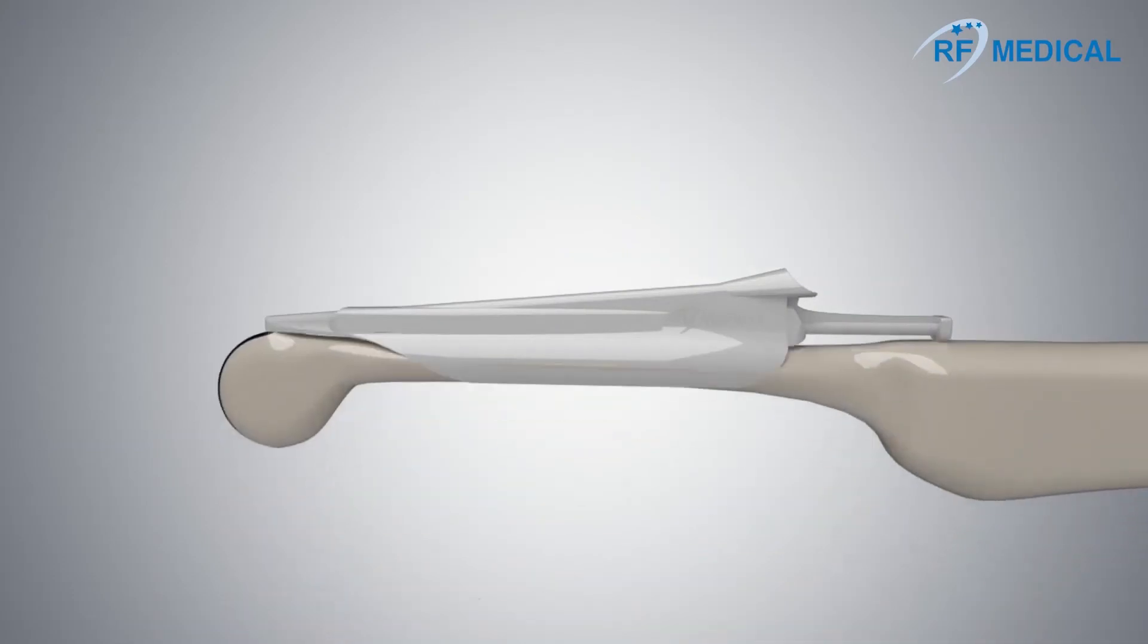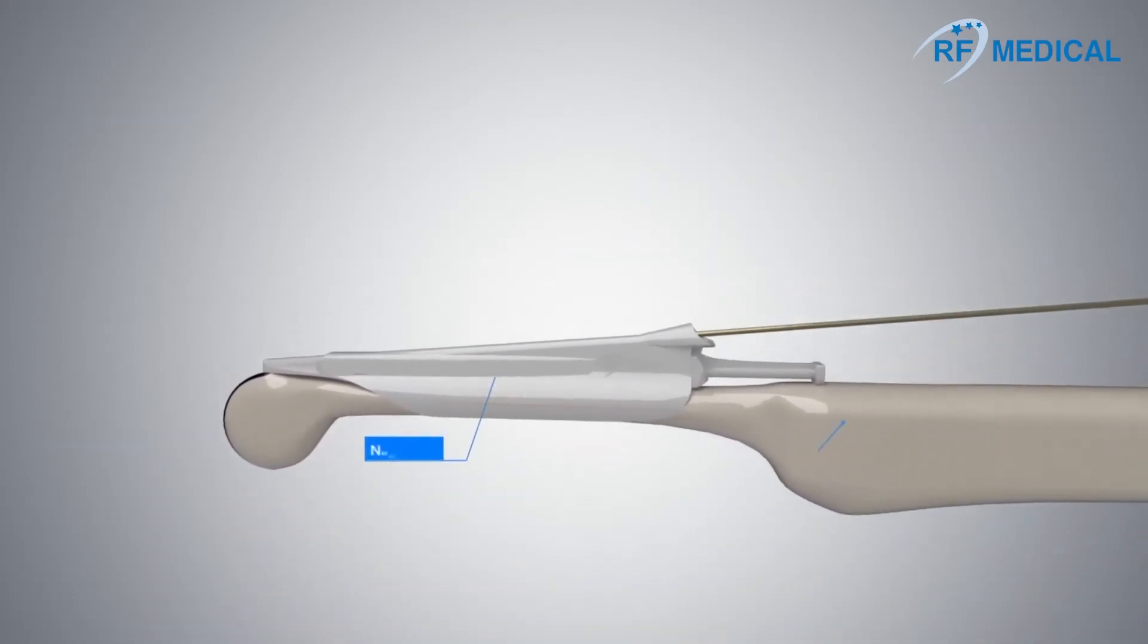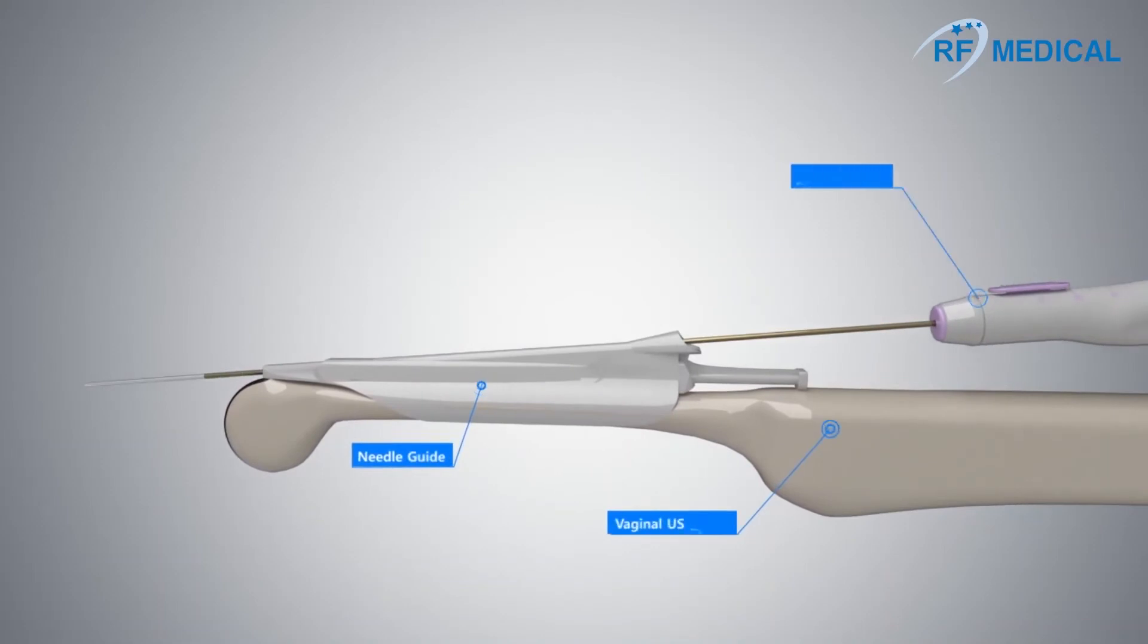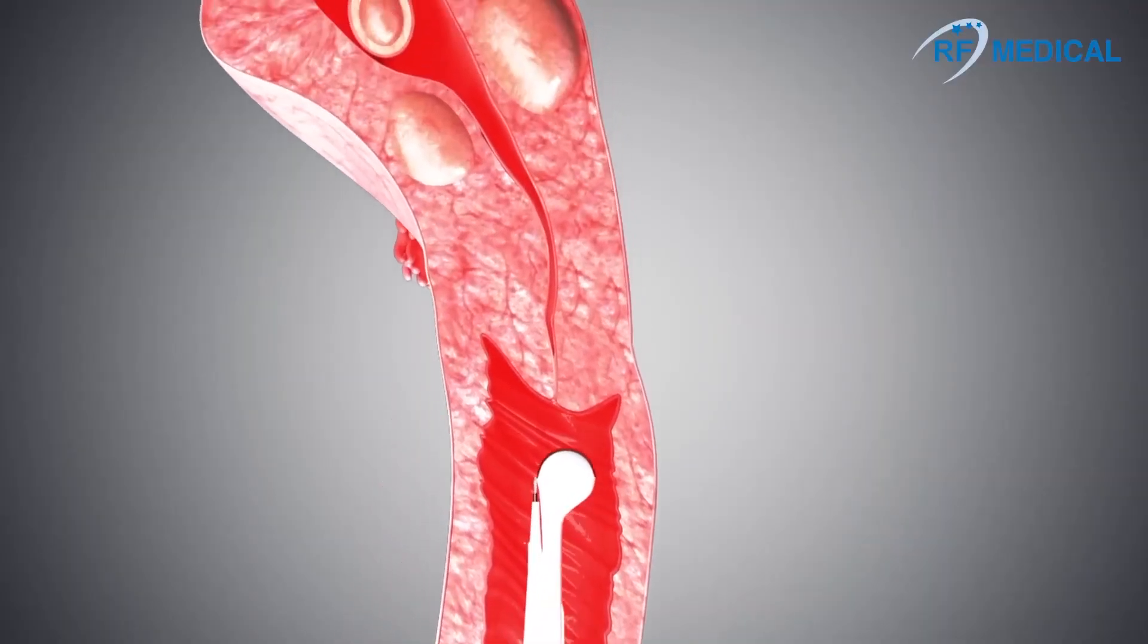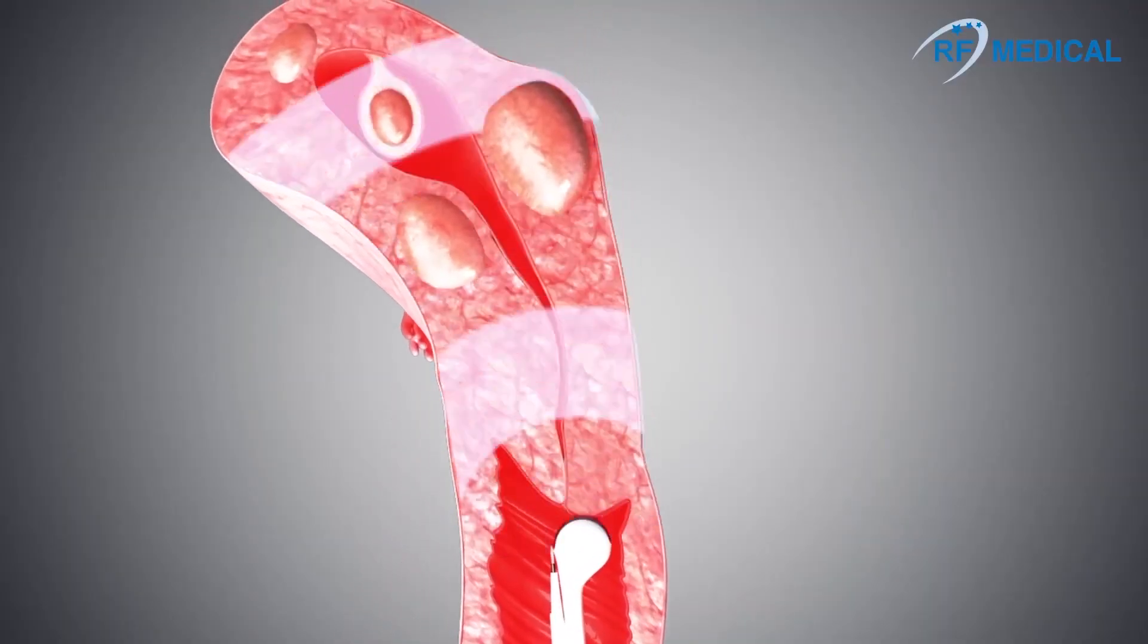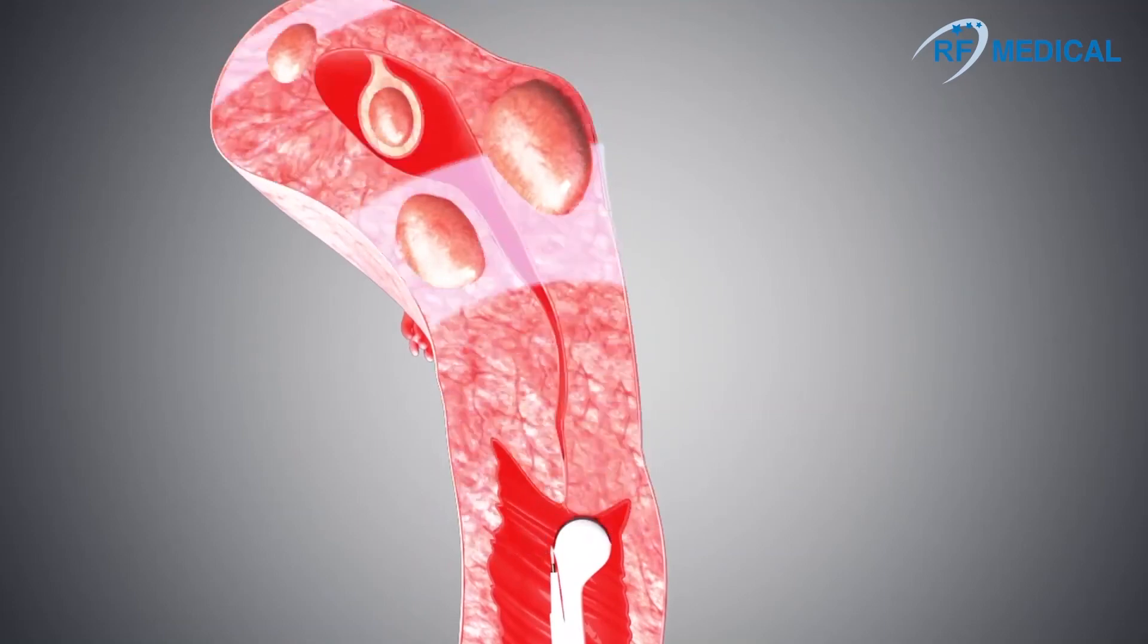To perform myoma RFA, a needle guide must be attached to the vaginal ultrasound probe. The needle guide allows the electrode to be inserted parallel to the ultrasound and facilitates myoma targeting.